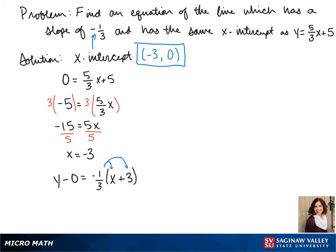We distribute that negative one-third to both of our terms and that gives us y equals negative one-third x minus one.